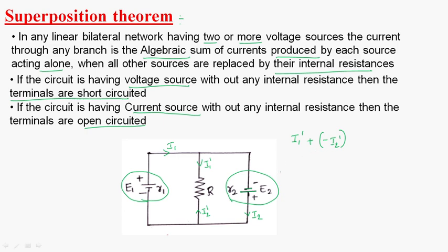Whenever we find a voltage source without any internal resistance, that source is short-circuited. Here, internal resistance R1 is given. If you find any current source without any internal resistance, then we have to open-circuit those terminals.